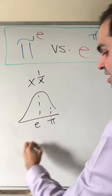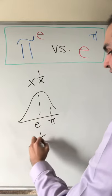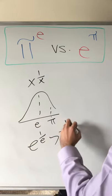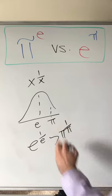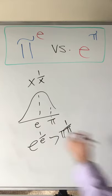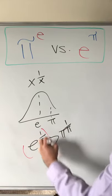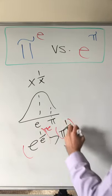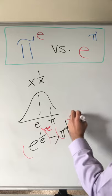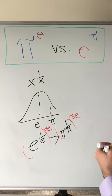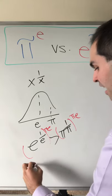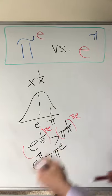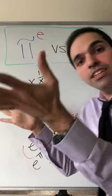And therefore e to the 1 over e is bigger than pi to the 1 over pi. Super fly! So raising this to the pi e-th power after a long shower, we get that e to the pi is bigger than pi to the e. QED.